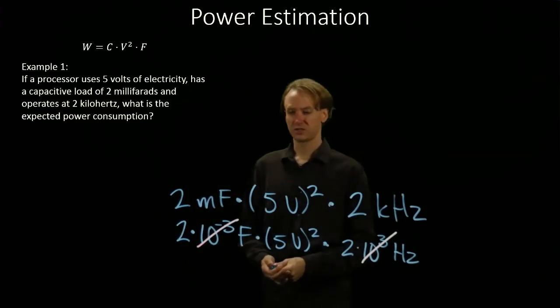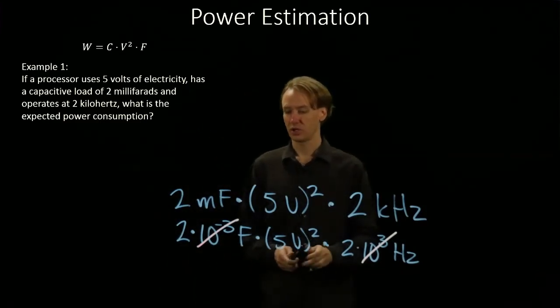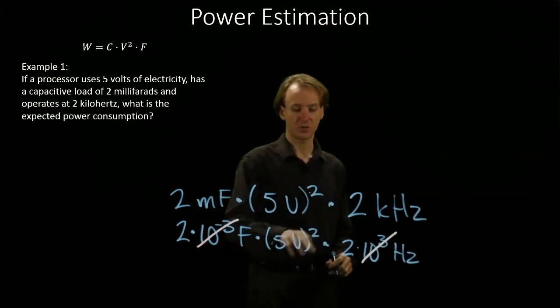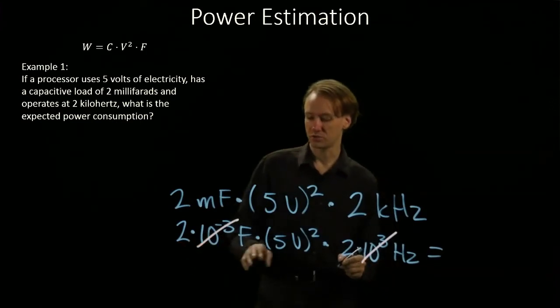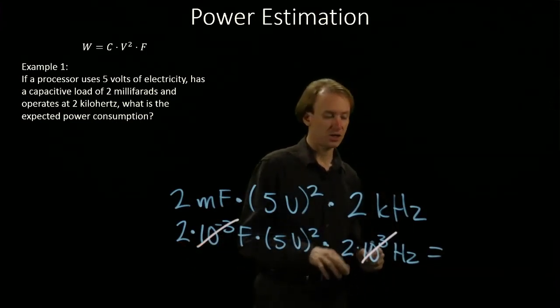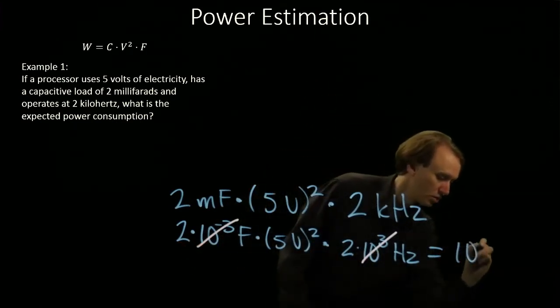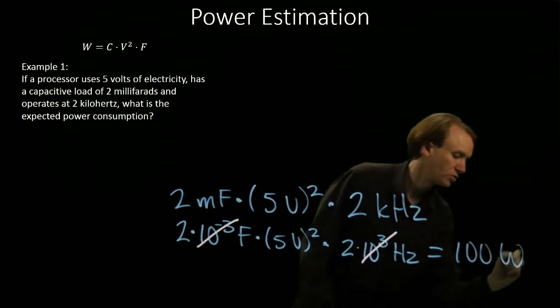Running the rest of the arithmetic through, we have 2 times 5 squared times 2. So 2 times 25 is 50, times 2 gives us 100 watts.